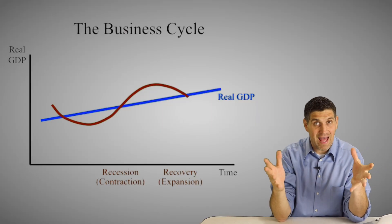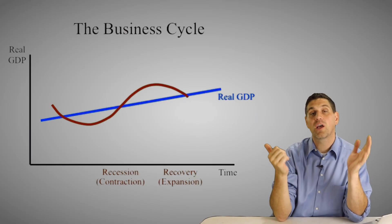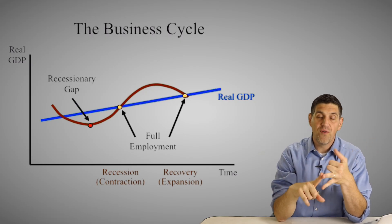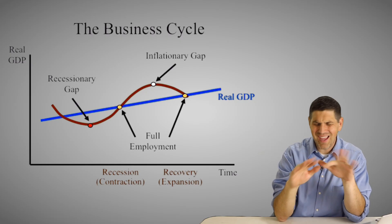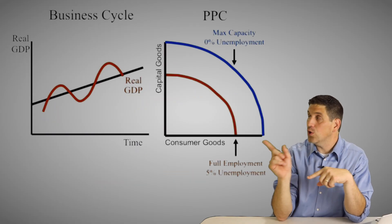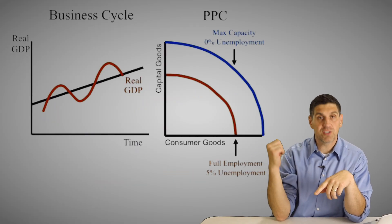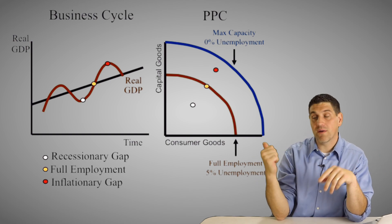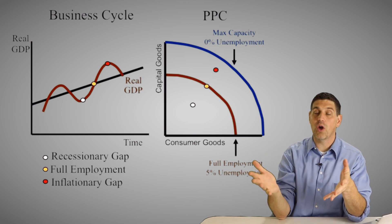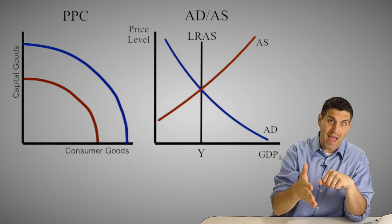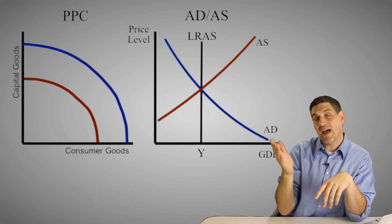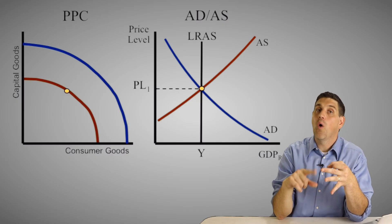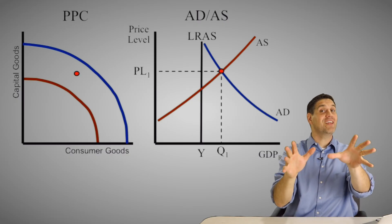The easiest graph in the class is the business cycle. It shows the economy can be in one of three places: recessionary gap, full employment, or inflationary gap. That graph also connects to the production possibilities curve that shows the same concept. Again, the economy can be at one of three places, which can also be shown on aggregate demand and supply — shifting that supply and demand curve around shows you that you can have a recessionary gap, full employment, or an inflationary gap.